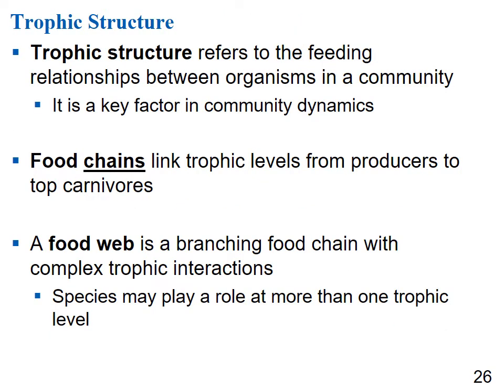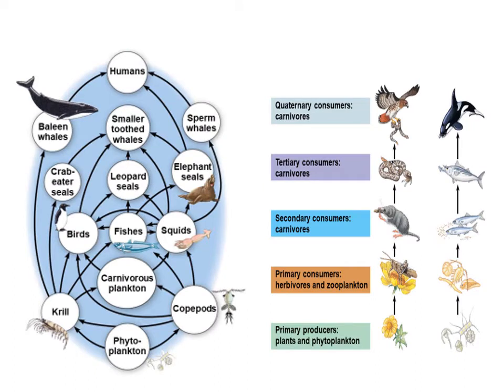Trophic structure refers to feeding relationships between organisms — a key factor in community dynamics. A food chain is a simplified diagram linking trophic levels from producers to top carnivores. A food web is a more complex, realistic diagram showing complex trophic interactions where species may play roles at more than one trophic level. In a food chain: primary producers are plants or phytoplankton, then primary consumers are herbivores or zooplankton, then secondary, tertiary, and quaternary consumers.